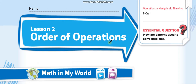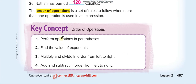To understand the order of operations, you have to memorize these four key concepts. The first one: perform operations in parentheses. These are the parentheses — whatever you have inside the parentheses, whether plus, minus, exponents, multiply, or divide, you solve that first.